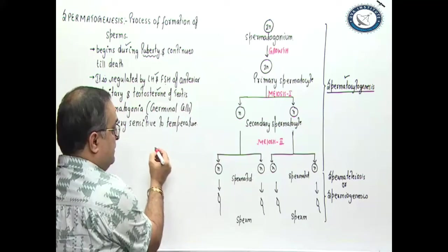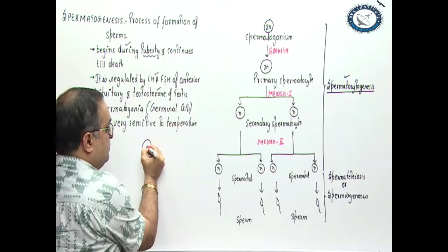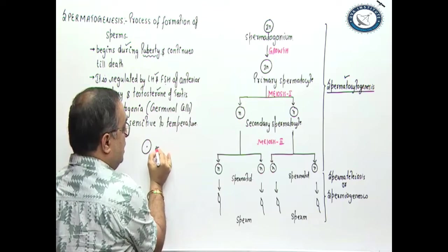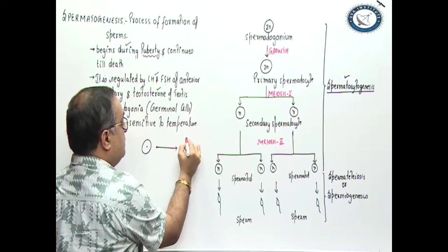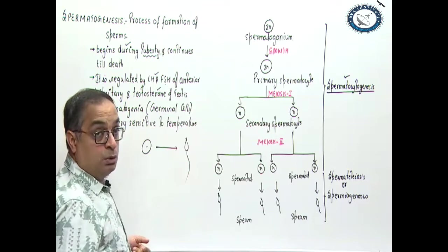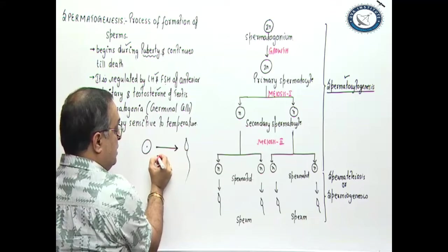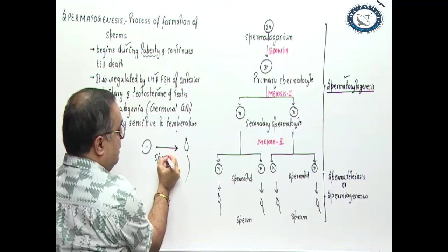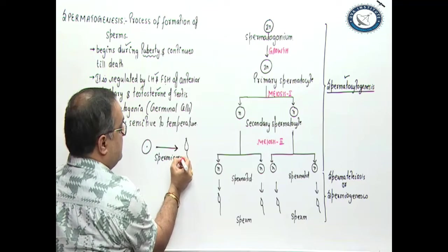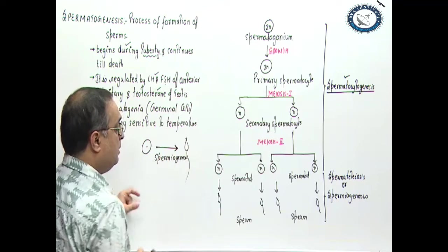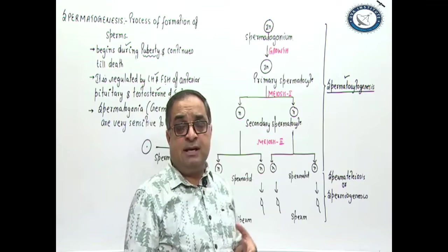Spermatid, as you can see here, spermatid is a kind of oval structure. This is going to change into the sperm, which has acrosome, which has tail. So, this process of differentiation is what is spermiogenesis.